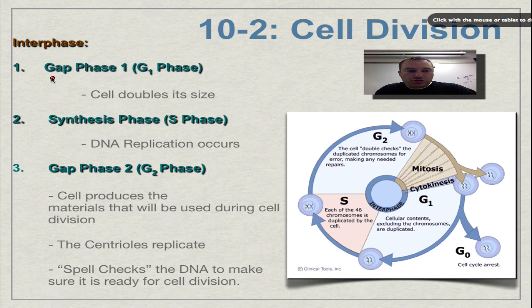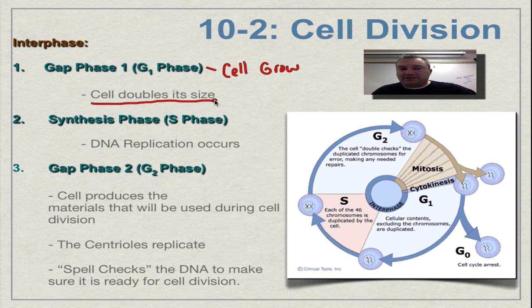So let's go with red. The first one is called G1. And in G1, this is when the cell is going to grow. So the cell is eventually going to double its size. That's kind of the maximum size for a cell, twice its original size. So as you can see here, things get duplicated. You got more cytoplasm, you got more organelles. You're going to have more ribosomes, etc. But you're not going to duplicate the chromosomes.